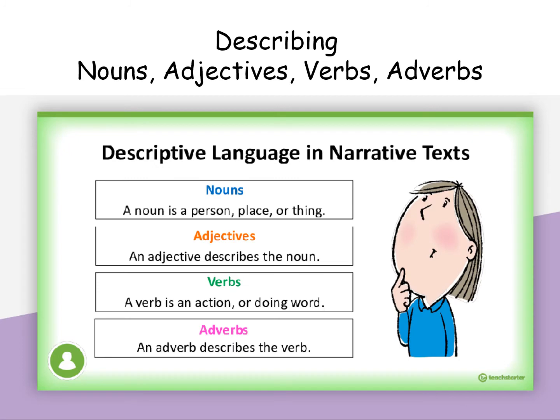Descriptive language review — in narrative texts we can use the following: nouns (a noun is a person, place, or thing), adjectives (an adjective describes the noun), verbs (a verb is an action or doing word), and adverbs (an adverb describes the verb).